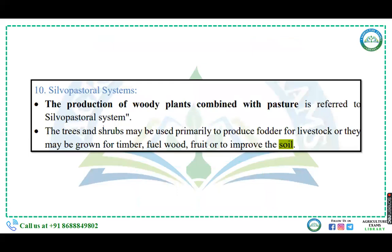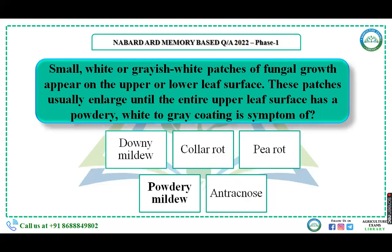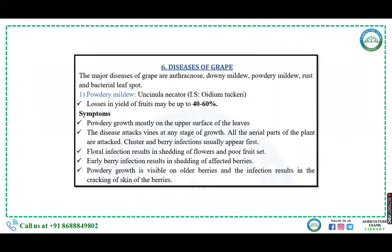Small white or grayish-white patches of fungal growth appear on the upper or lower surface of leaves; these patches usually enlarge until the entire upper surface has a powdery white to gray coating. This is the symptom of powdery mildew. Powdery mildew mostly appears on the upper surface of leaves and can reduce the yield of fruits by up to 40 to 60 percent in case of grapes.